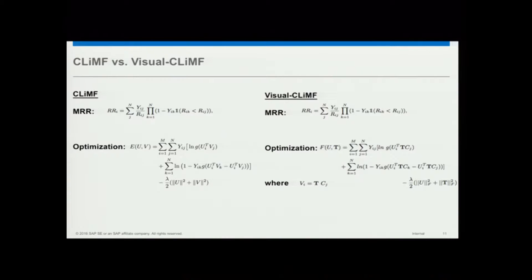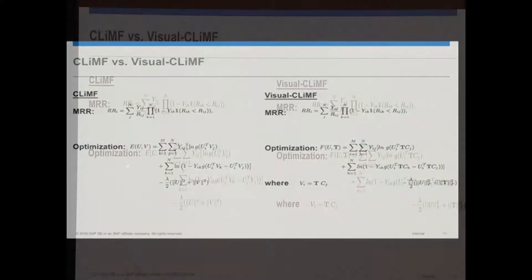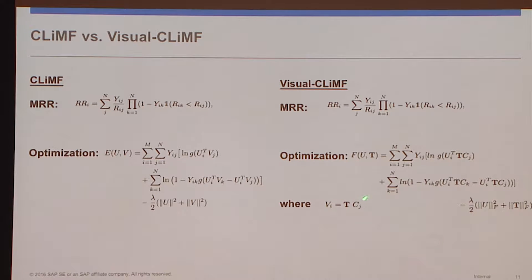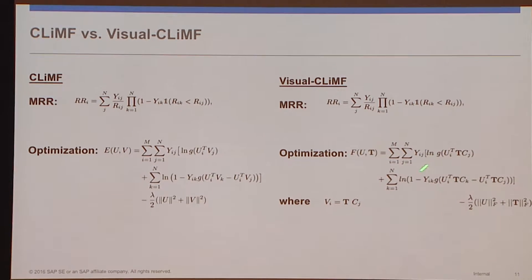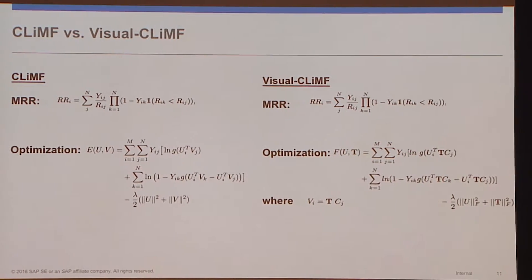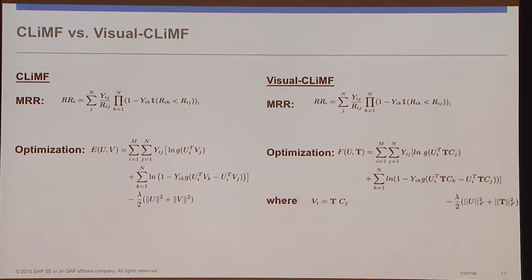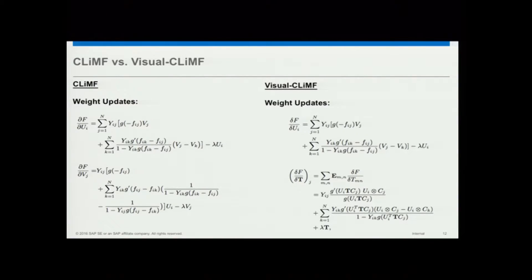The difference in our formulation: the objective is the same, but in the optimization function I've replaced it so that I learn a transformation T from the content to the item representation. Basically what we are trying to learn is T and U, the user representation. Once we have T, for new content — even content with less collaborative information — you could actually find V. The weight updates can similarly be derived.